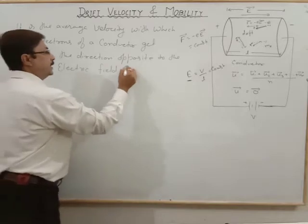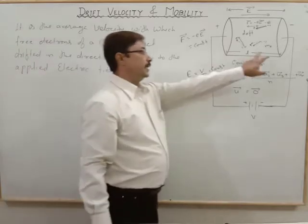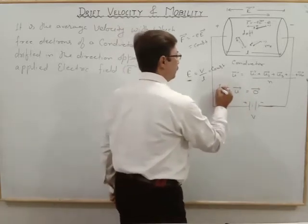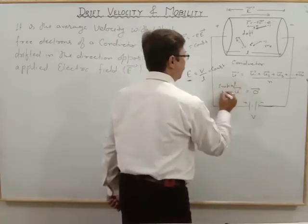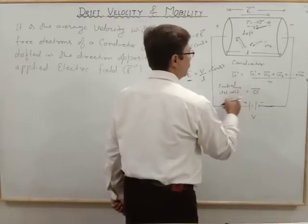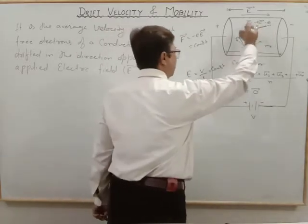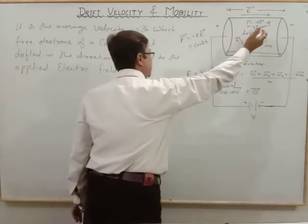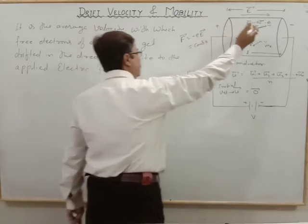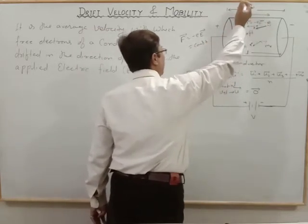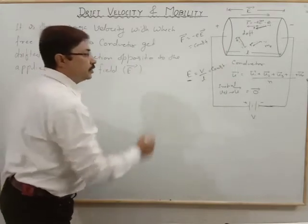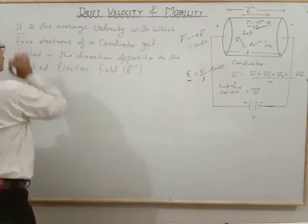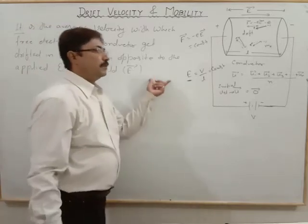The applied electric field is the key here. Earlier the mean average initial velocity was zero, but because of the applied field, all electrons drift together with an average velocity against the applied electric field, and that is called drift velocity.